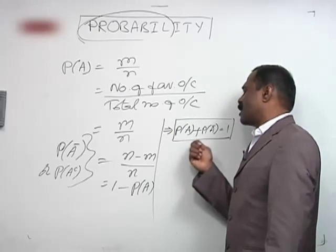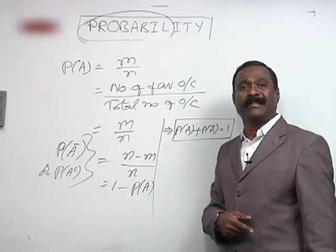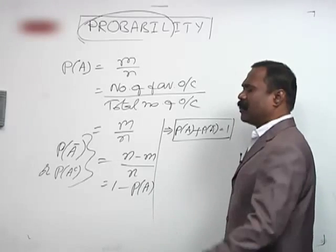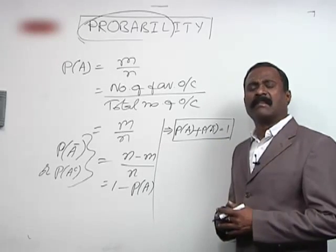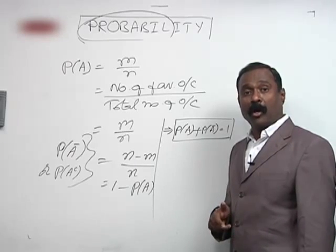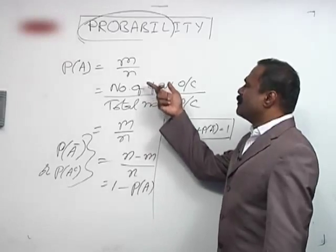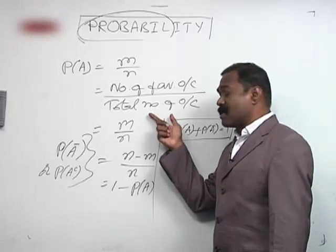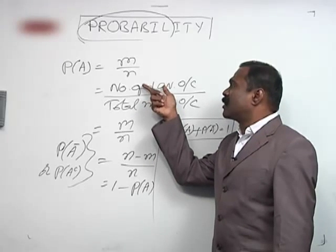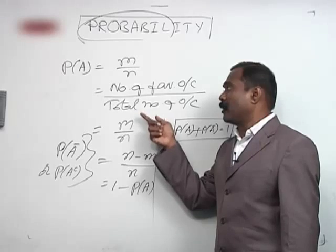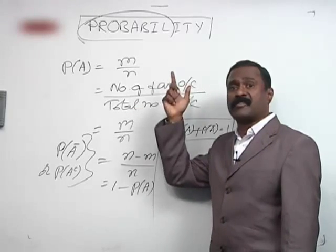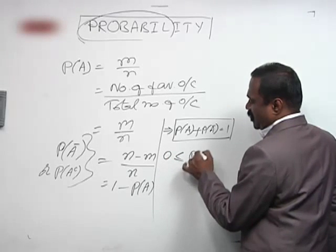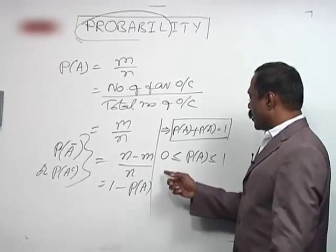The sum of the probabilities of occurrence and non-occurrence of an event is always equal to unity. Probability will never be negative and will never exceed 1 — it always lies between 0 and 1. This is clear because the numerator is contained in the denominator, so the numerator will always be less than or equal to the denominator.